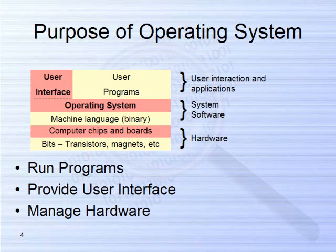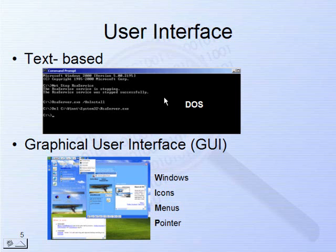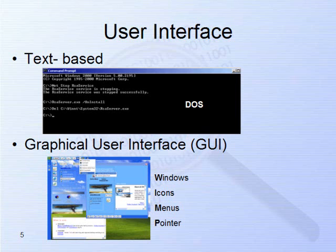There are two forms of user interfaces provided by operating systems. The old-style interface was strictly text-based. Here you see what's called a command prompt, or a DOS window, in a Windows operating system. In the early to mid-late 1980s, most computer operating systems looked like this — a dark screen with a prompt to which you could type commands. You had to learn a large number of esoteric commands; for instance, deleting everything from the floppy drive required typing 'DEL space star dot star.'